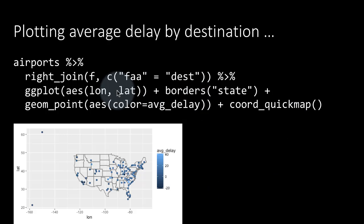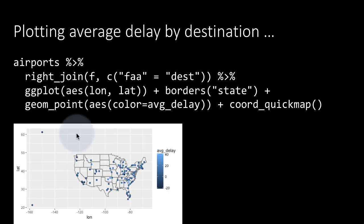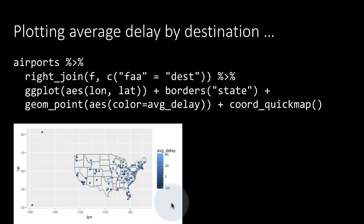We have not eliminated Honolulu and Anchorage, so we get those two outliers. What we are doing is coloring by the delay: longer delays are light colored and shorter delays are dark colored. However, shades of color are very difficult for the human eye to interpret, so the distinction between the shades doesn't come out all that well.